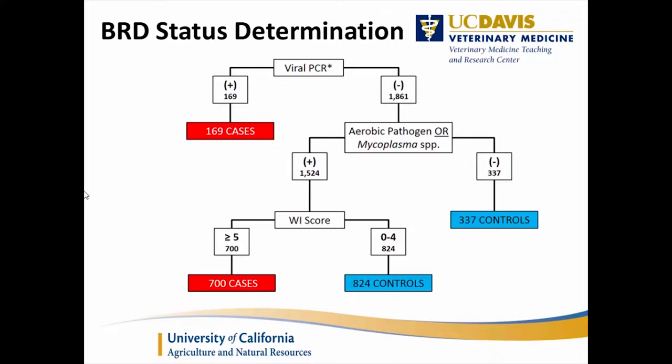An important point: you can't use a scoring system to find the positive cases when developing that same scoring system — there would be bias, almost like perfect agreement. So we had to define BRD cases using a multitude of data including microbiology. If a calf was BRSV positive — 169 cases — all of them became BRD cases. If we detected Pasteurella multocida or B. trehalosi, they also had to have a Wisconsin score of greater than or equal to 5 to be called a case.